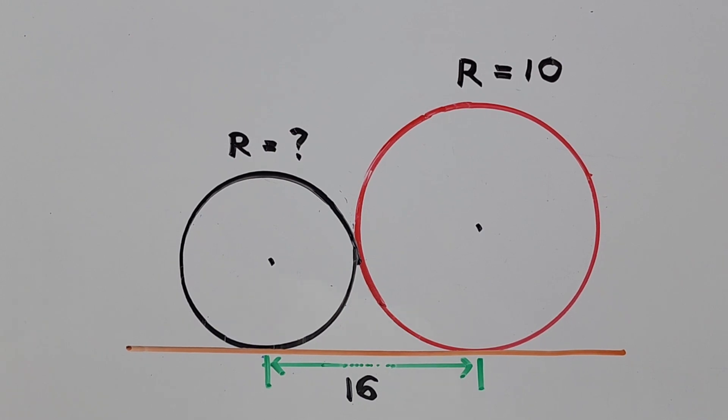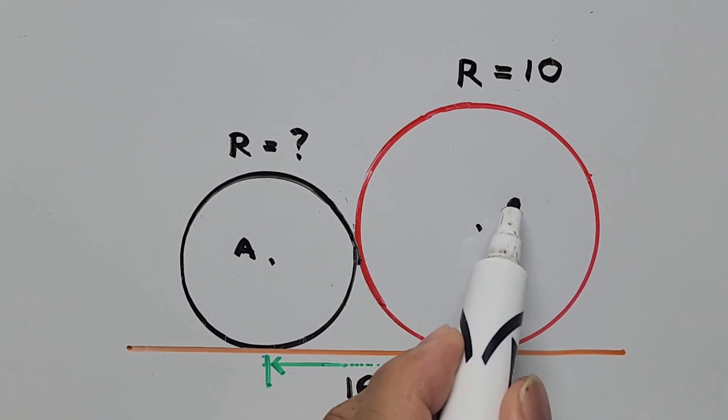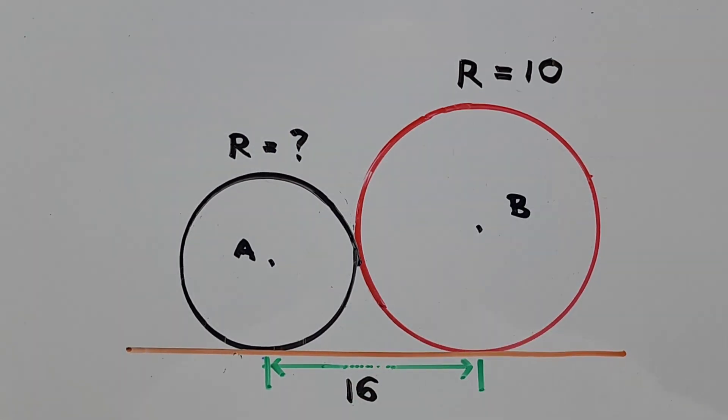First we're going to label the centers of this circle as A, and the bigger circle as B, and the point of tangency of this smaller circle as C at this point, and the bigger circle D.